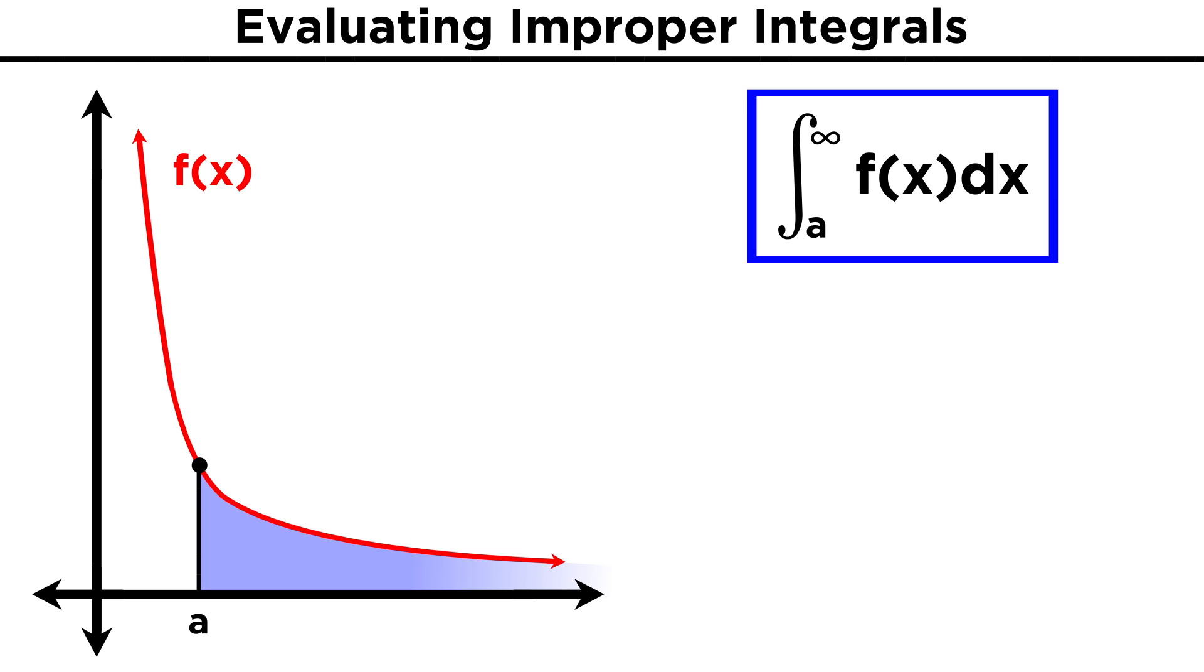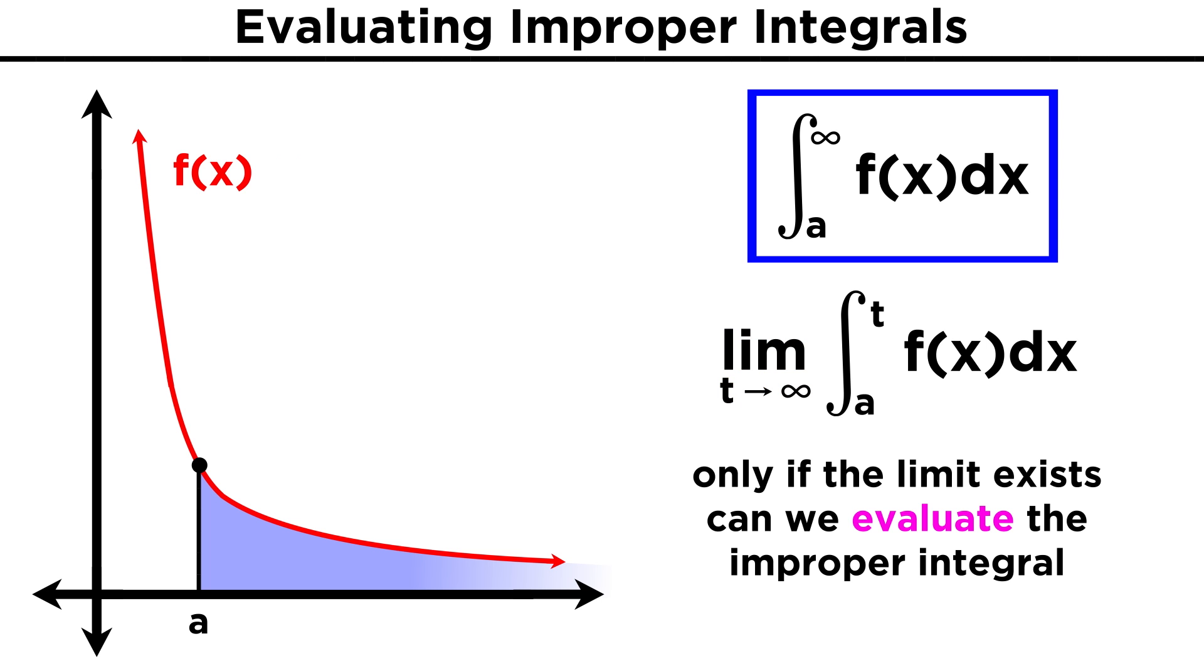This gives us a simple way to evaluate improper integrals. We can integrate f(x)dx from a to infinity, and this will simply be equal to the integral over the definite interval from a to t in the limit of t approaching infinity. This limit may or may not exist, which means that not all improper integrals can be evaluated, but some indeed can.